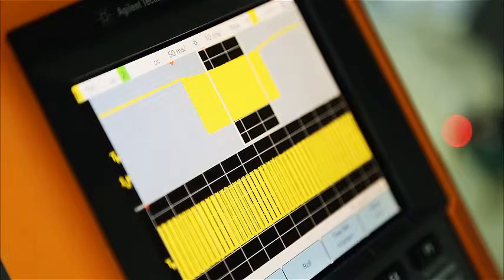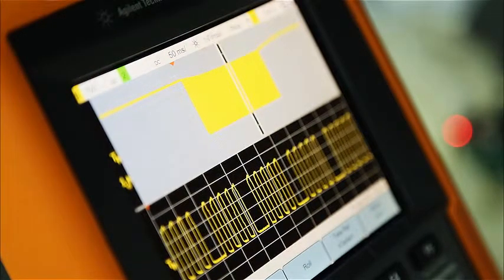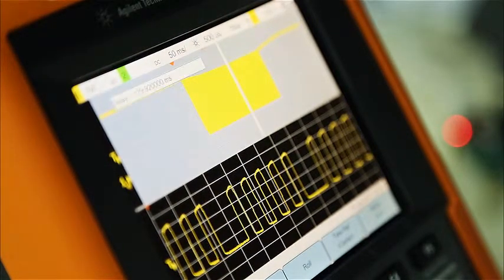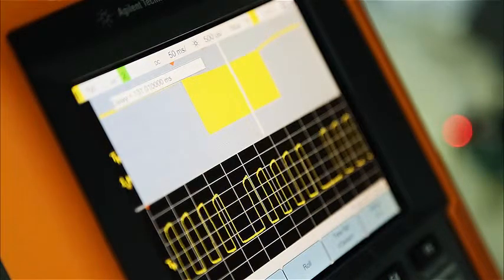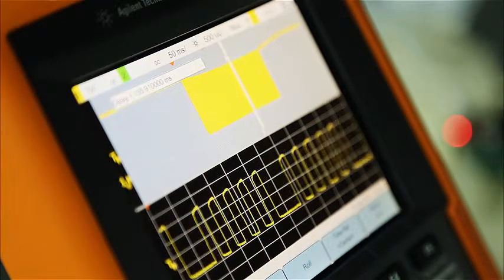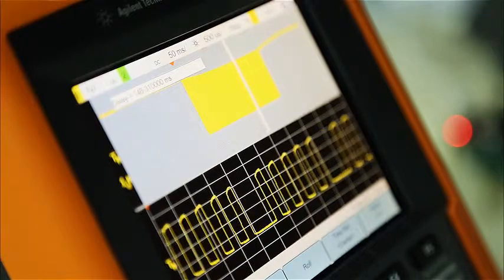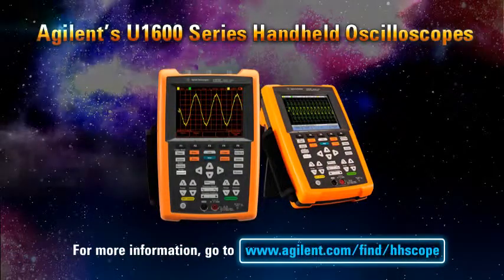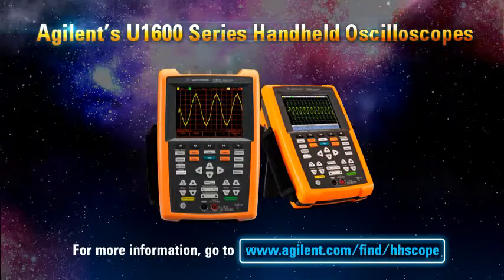The U1610A and U1620A deep memory allows the scope to maintain its maximum sampling and retain all the waveform details even during zoom-in. For more information on these Agilent handheld scopes, please contact us now.